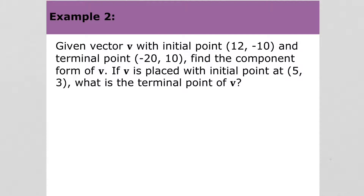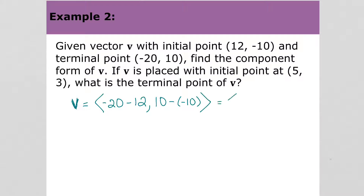Example 2 says: given vector v with initial point (12, -10) and terminal point (-20, 10), find the component form of v. So the component form of v would be, just as we did in example 1, the x value of the terminal point minus the x value of the initial point, then the y value of the terminal point minus the y value of the initial point. So we get negative 32, 20.